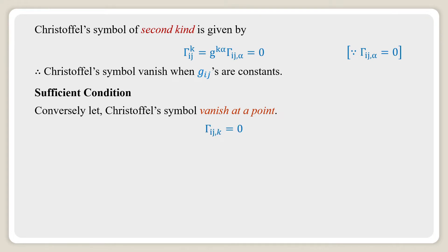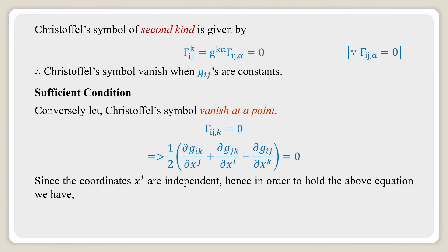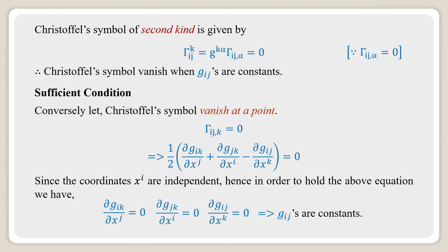Sufficient condition: If Γij,k = 0, this implies (1/2)(∂Gik/∂Xj + ∂Gjk/∂Xi − ∂Gij/∂Xk) = 0. Since the coordinates Xi are independent, in order for the above equation to hold we must have ∂Gik/∂Xj = 0, ∂Gjk/∂Xi = 0, and ∂Gij/∂Xk = 0, which implies the Gij are constant. Therefore, if the Christoffel symbols vanish at a point, then Gij are constant.